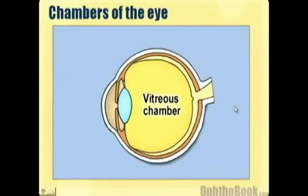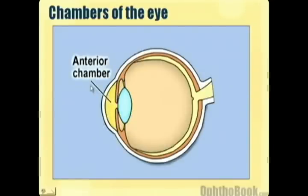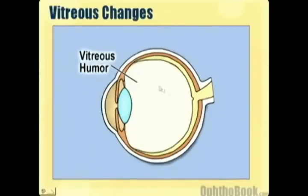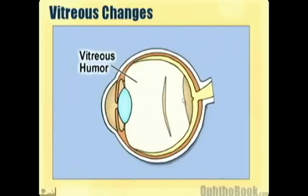There are actually three chambers in the eye, not two. The vitreous chamber is in the back, the posterior chamber is between the lens and the back of the iris, and the anterior chamber is in the front. The vitreous chamber is filled with vitreous humor, a jelly-like fluid that at birth has the consistency of Jell-O. As you age, little pockets of liquefaction develop, and eventually it can pull off the back of the retina — a posterior vitreous detachment. This is very common, almost always harmless, but can cause floaters.